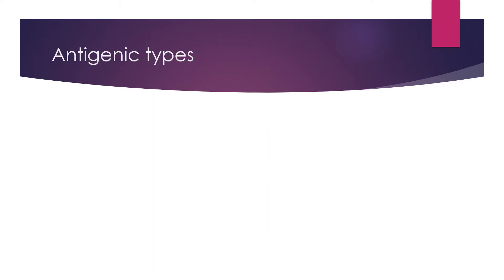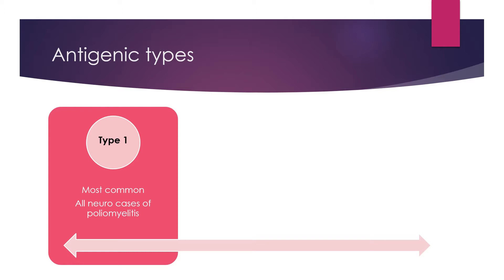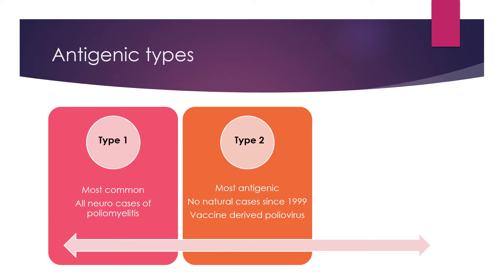There are three types of antigens. Type 1 is the most common serotype to cause epidemics of poliomyelitis and is responsible for all natural cases of polio occurring globally. Type 2 is the most antigenic in nature and hence the easiest serotype to be eradicated.